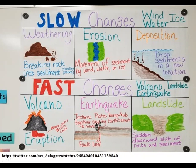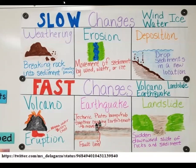For weathering, we have the breaking of rocks into sediments. For erosion, this is the movement of sediment — see the difference? In weathering, the rock is broken into small pieces called sediments. While in erosion, the key word is movement — erosion happens when sediments move. Deposition is when the sediments stop moving and settle on a certain area. Weathering, erosion, and deposition all come together and are classified as slow changes. The fast changes are brought about by the movement of tectonic plates: volcanic eruption, earthquake, landslide, tsunami, and flooding.